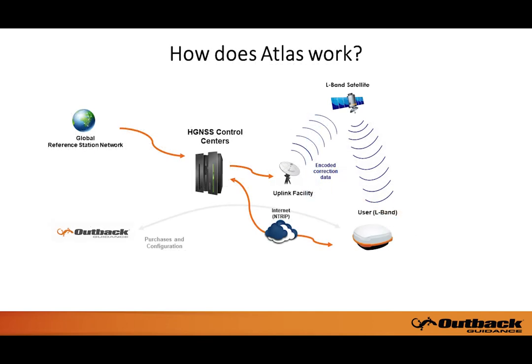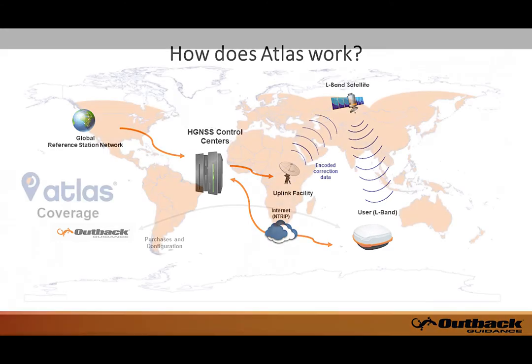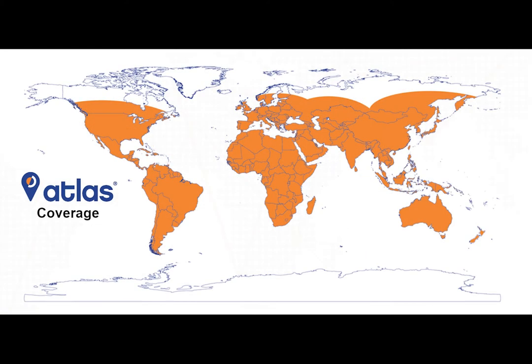Atlas is an industry-leading GNSS-based global L-band correction service that provides robust performance at market-leading prices. The Atlas Correction Service provides additional GNSS accuracy options between WAAS and RTK, leveraging approximately 200 reference stations worldwide with L-band satellites distributing Atlas Corrections. Virtually the entire globe is covered.